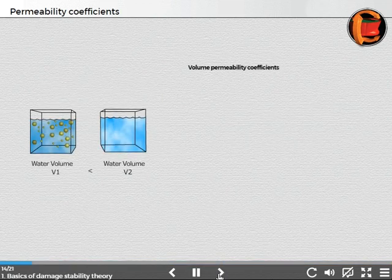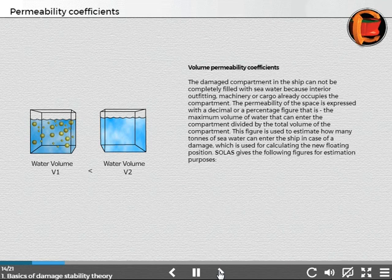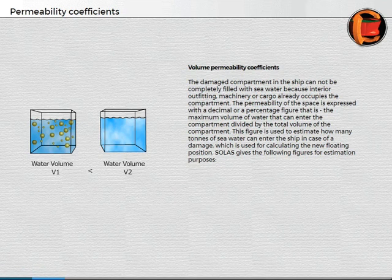Volume permeability coefficients. The damaged compartment in the ship cannot be completely filled with seawater because interior outfitting, machinery, or cargo already occupies the compartment. The permeability of the space is expressed as a decimal or percentage figure, that is, the maximum volume of water that can enter the compartment divided by the total volume of the compartment.